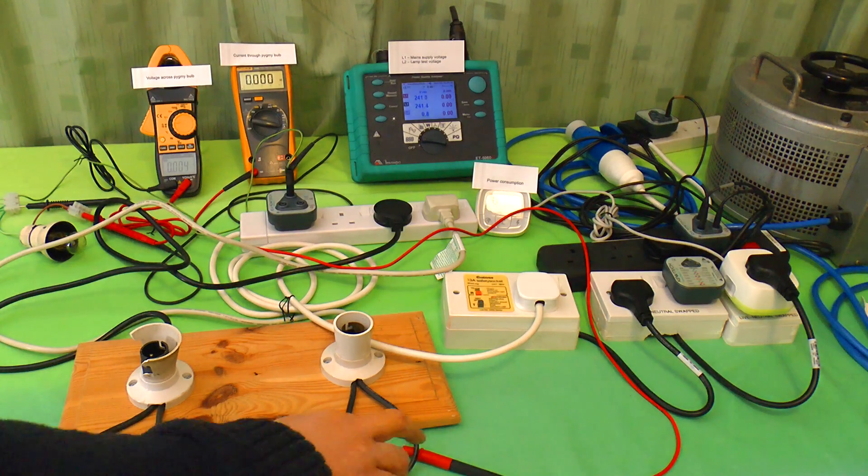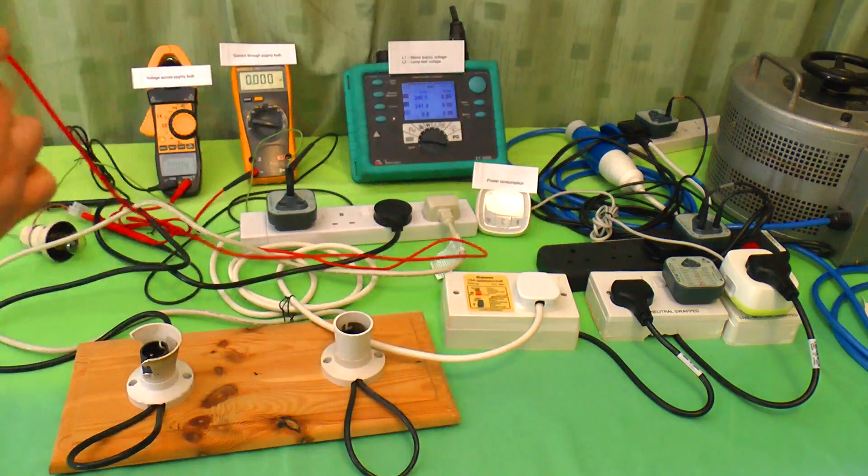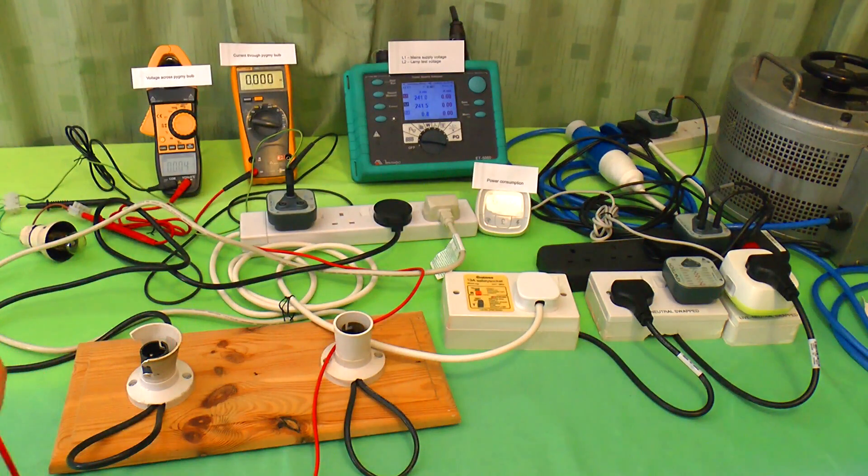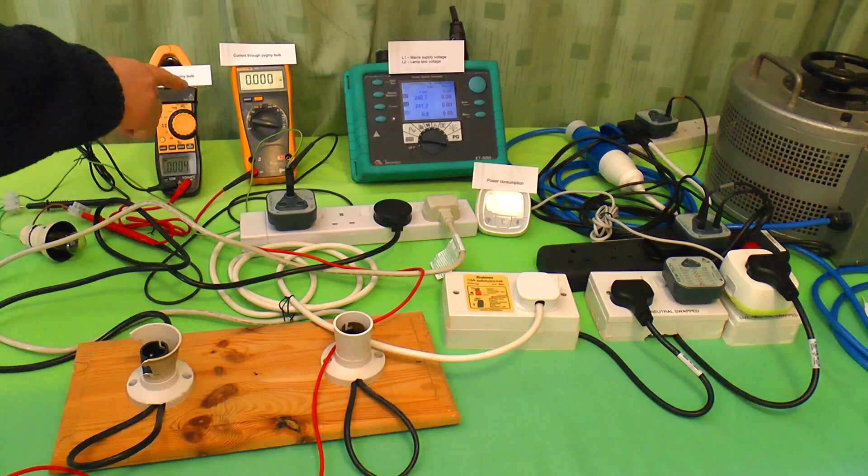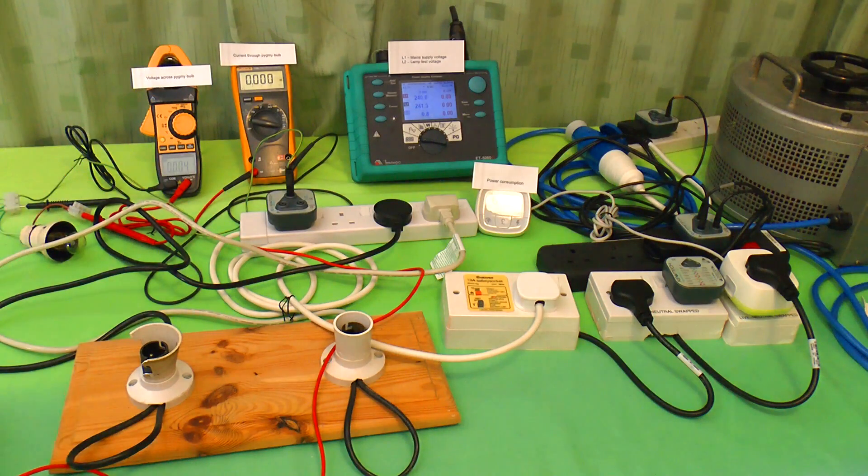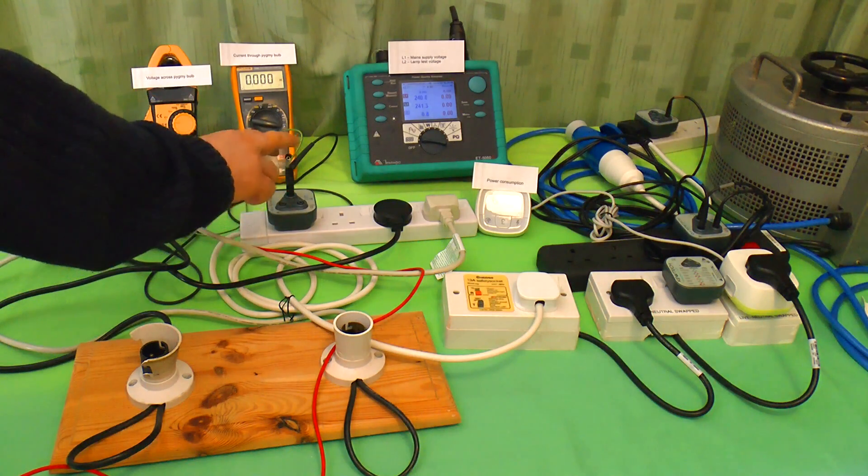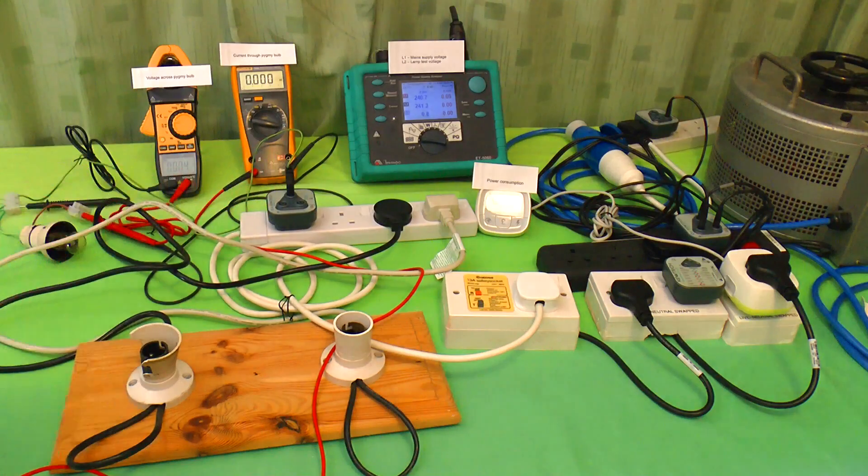Here, it's connected to this probe lead and shows if something is live. The higher the voltage, the brighter the bulb. These meters show the voltage across the bulb and the current flowing through the bulb. And the other end of the pygmy bulb can be connected either to neutral or to earth right here.